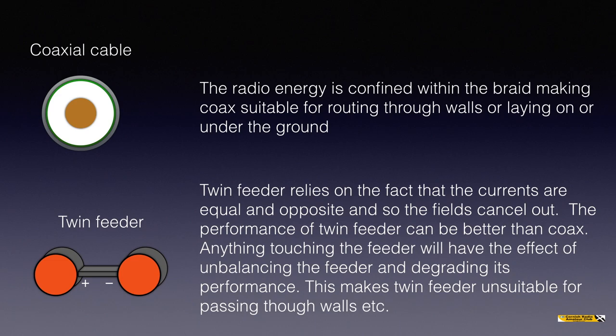The overall picture is that while twin feeder can offer performance advantages in the right situation, it's problematic when you have to pass it through walls or trail it along the ground, because that upsets the fields around the individual conductors and the cancellation of equal and opposite fields is compromised. So generally speaking — and the syllabus refers to this — coaxial cable is the more commonly used type of feeder. Coaxial cable is unbalanced, and twin feeder is balanced.